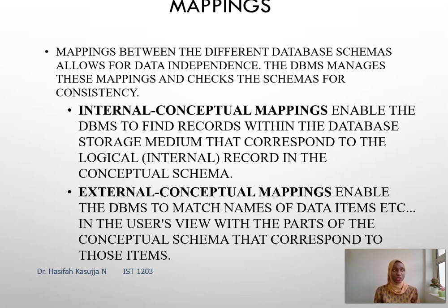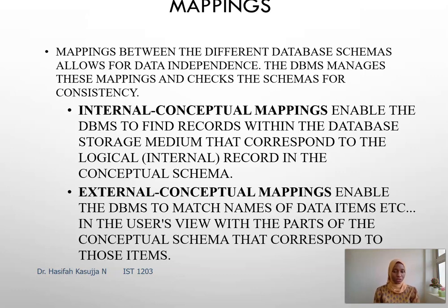In the internal-conceptual mapping, you're looking at the two bottom levels of the ANSI SPARC — that is the internal level and the conceptual level. Here, the database management system tries to find the records in the storage medium and corresponds them to those that are in the conceptual level. Whatever is in the storage medium should match or correspond to what is at the conceptual level. That is what we call internal-conceptual mapping.